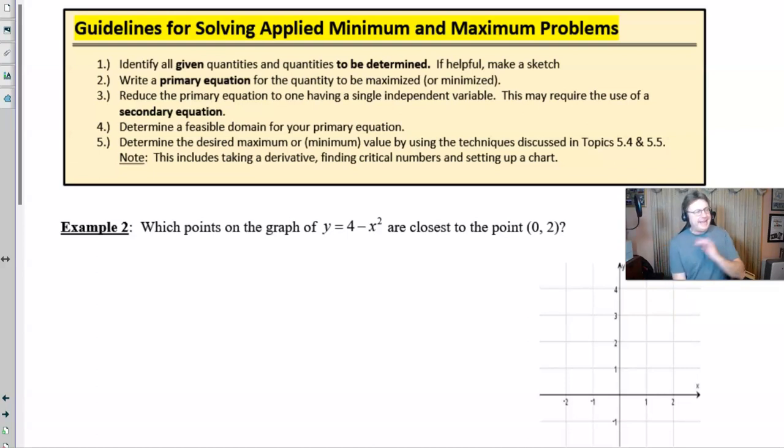So our example: y equals 4 minus x squared. What points on that graph are closest to the point (0, 2)? Before anything happens, we've got to figure out what it is that we're trying to maximize or minimize. We see this word closest, which is a very charged word in this problem, which means we're trying to find a minimum.